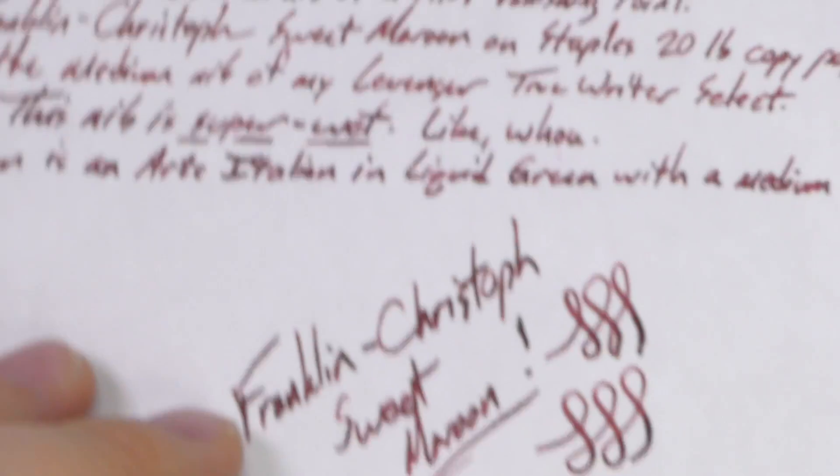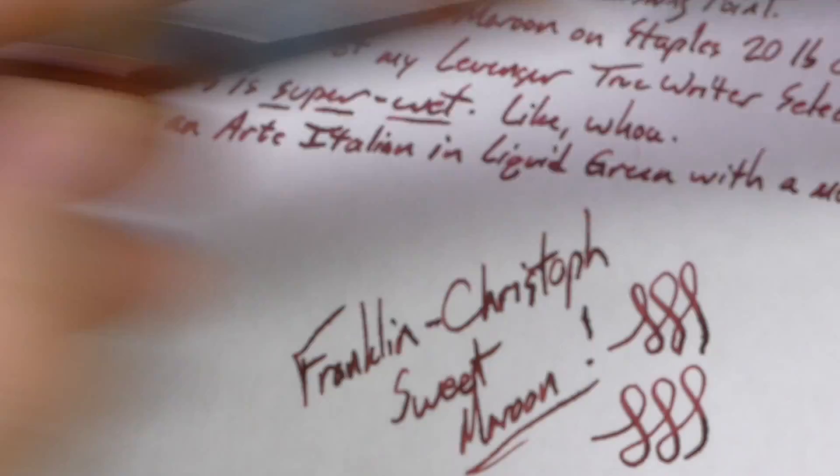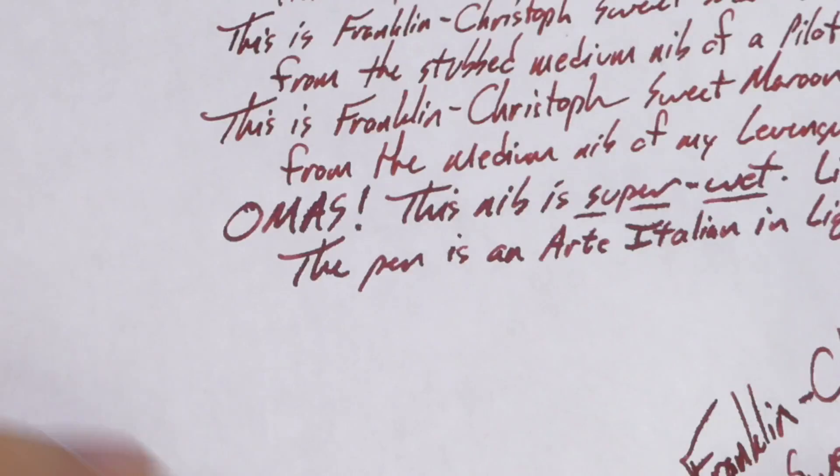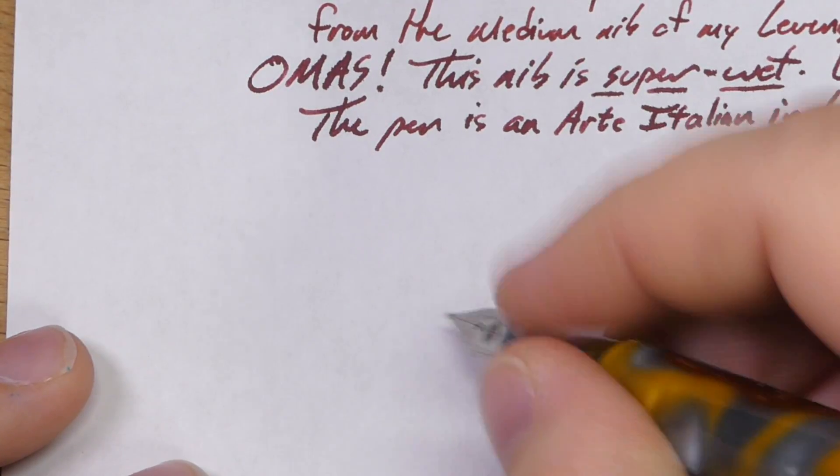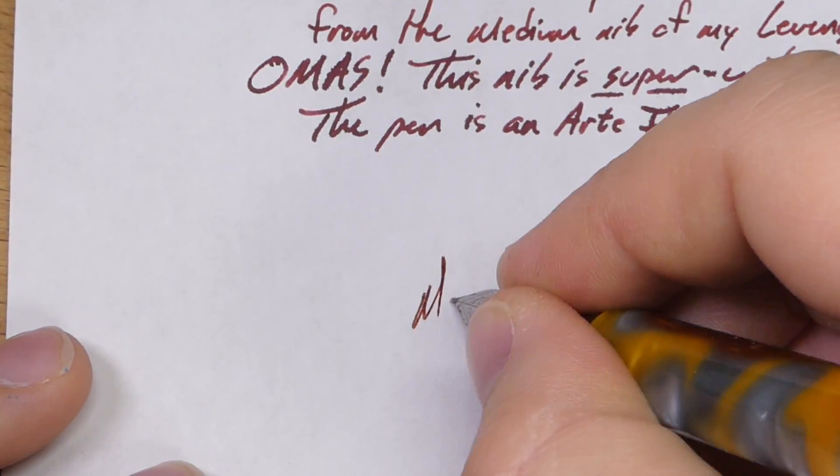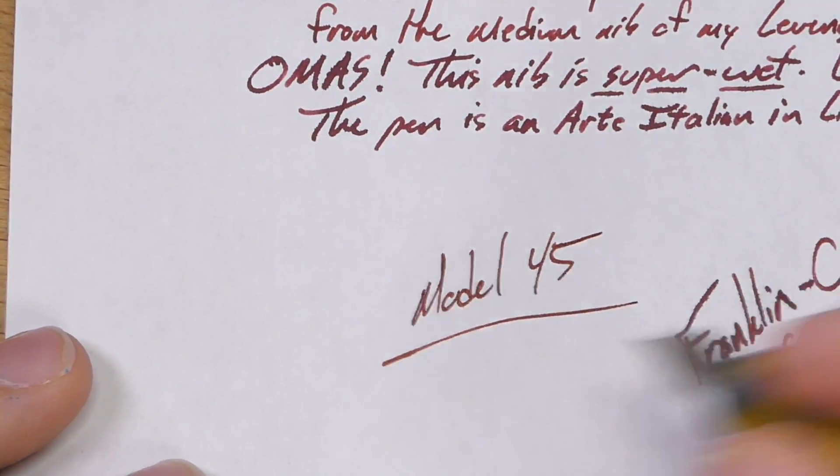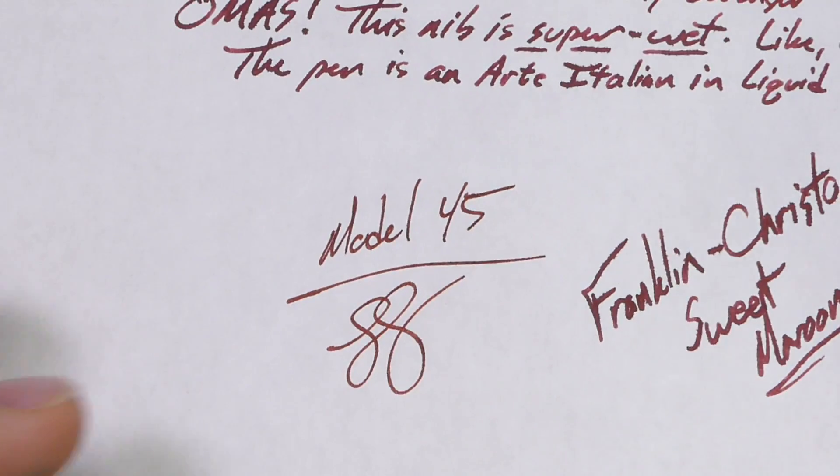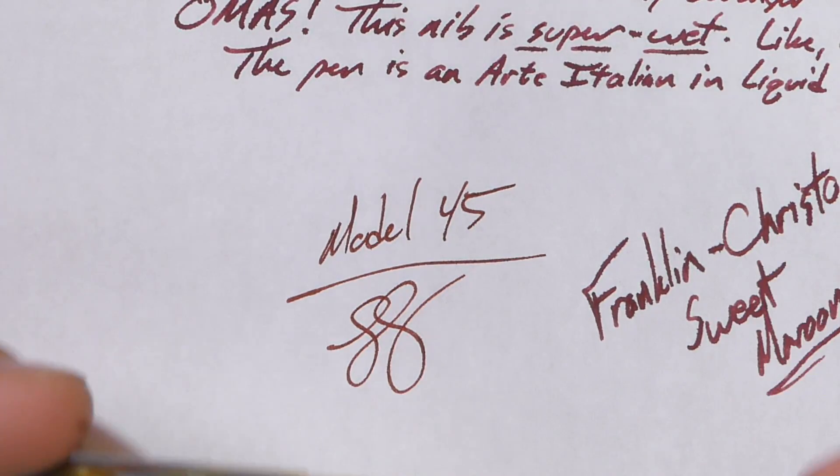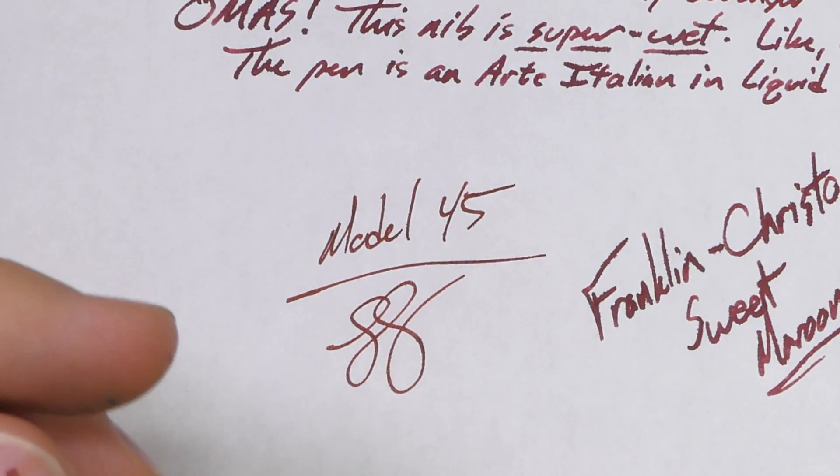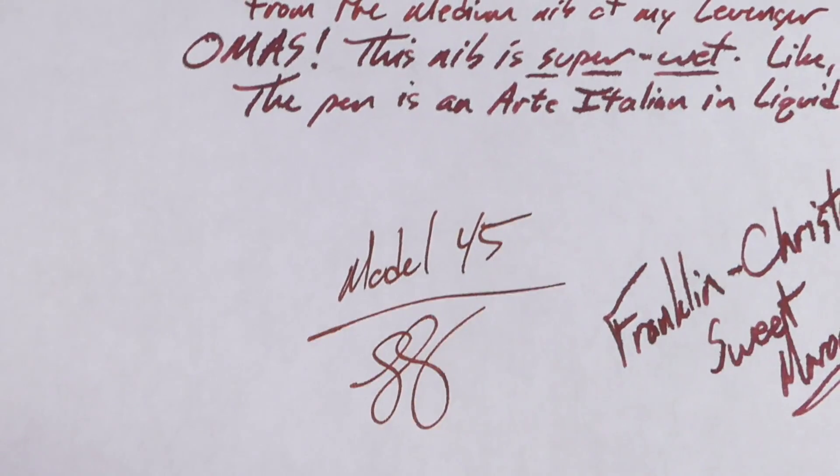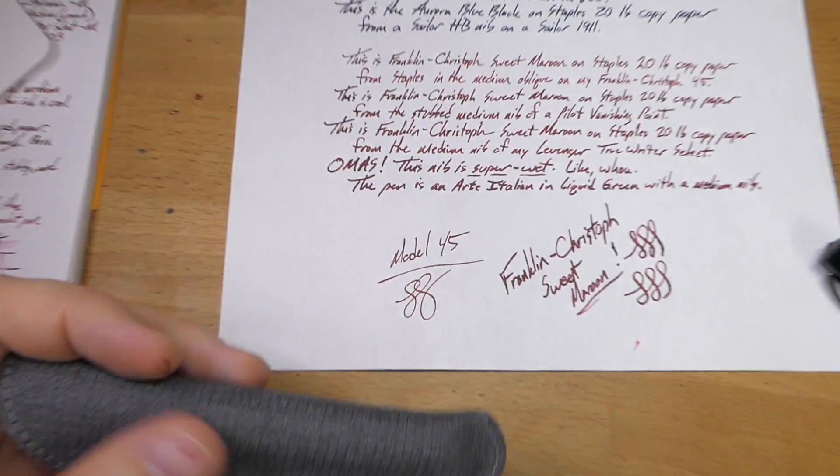The other nibs, you don't really see that. Let's do a quick writing example of this one too, since this video is not too long. This is the Model 45. No problems there at all. And dry already on the 20-pound. This is an ink that I would definitely recommend to pretty much anybody. I have had no problems with it at all, and I really like the way it looks.